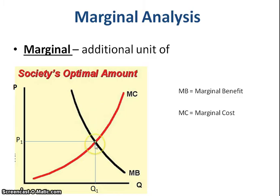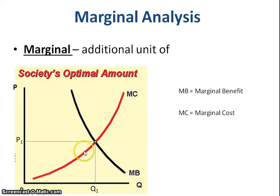At Q1 is the socially optimal amount. A term that will be used throughout is allocative efficiency, and it's really important. Allocative efficiency will have many different formulas, but the first one we're looking at is marginal benefit equals marginal cost — and this is the optimal amount where marginal benefit equals marginal cost.